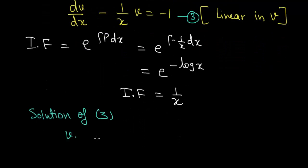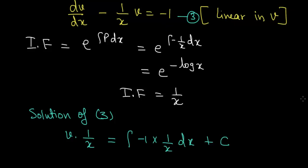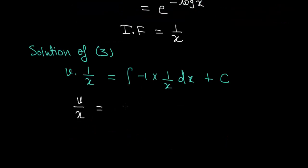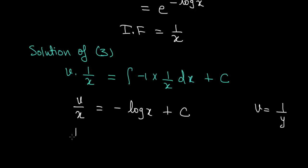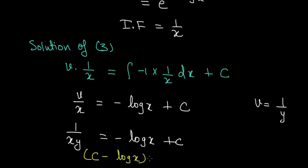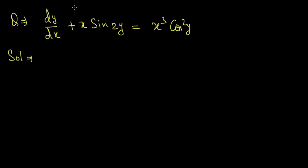The solution is v·(1/x) = ∫(−1)·(1/x) dx + C, which gives v/x = −log x + C. Substituting back v = 1/y, we get 1/(xy) = −log x + C, or equivalently (C − log x)·xy = 1. This is the answer.